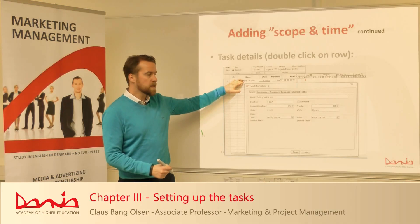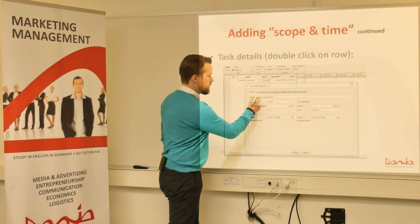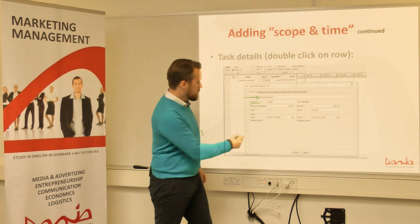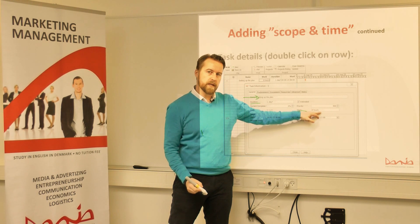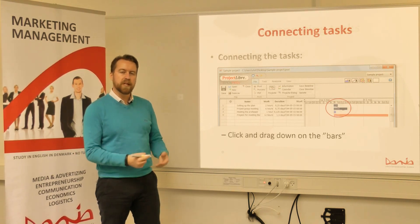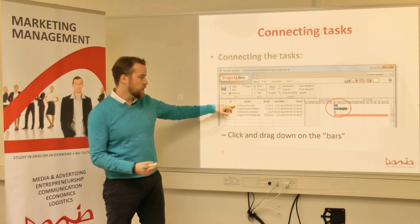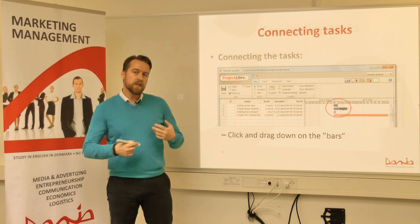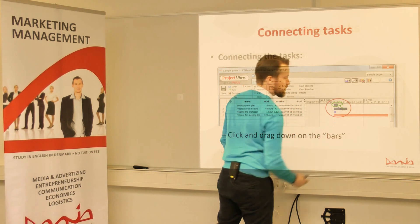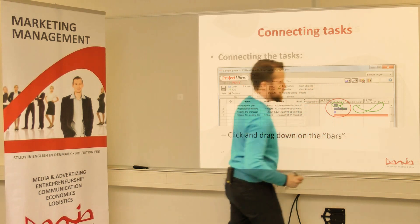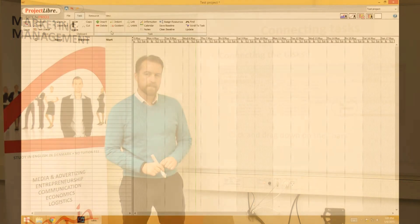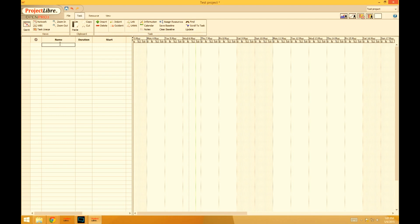When you double-click on a task, you'll get the task information. In the task information, you can adjust the name of the task, adjust duration, and work. Work here we set for eight hours. When you have filled in all the tasks that you need for your project, the next step is connecting them. There's a natural link between some of your tasks — for example, you need to set up your project before you can do the group meeting. The way to connect tasks is by clicking on the task you want to connect from, dragging to the task you want to connect to. You'll notice this infinity symbol — letting go of the mouse cursor on the next task will connect these two tasks.